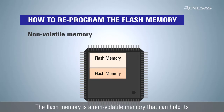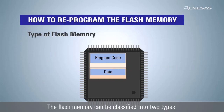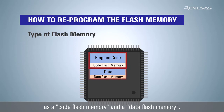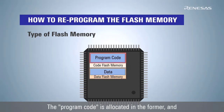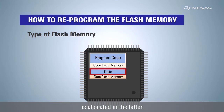The flash memory is a nonvolatile memory that can hold its contents even when the power is turned off. The flash memory can be classified into two types: a code flash memory and a data flash memory. The program code is allocated in the former, and the data that we want to keep even when the power is turned off is allocated in the latter.